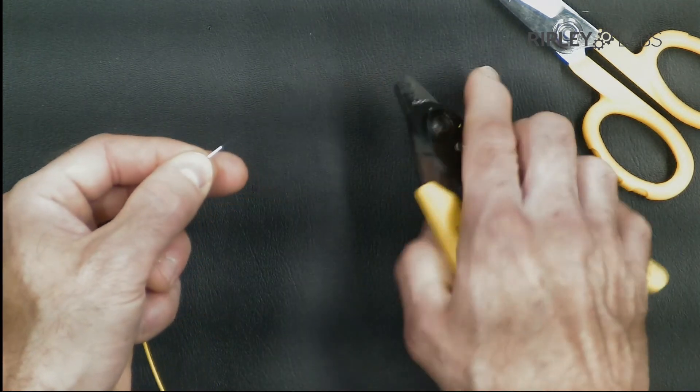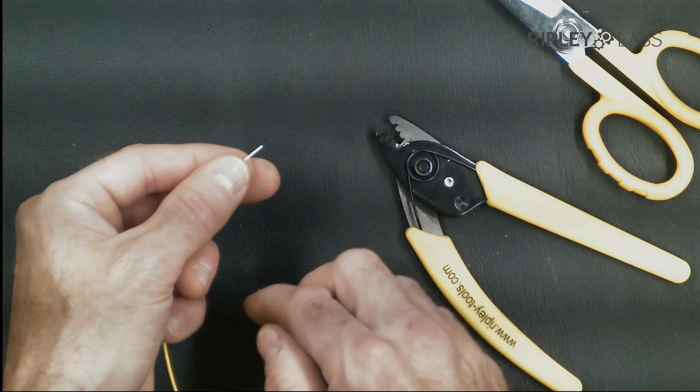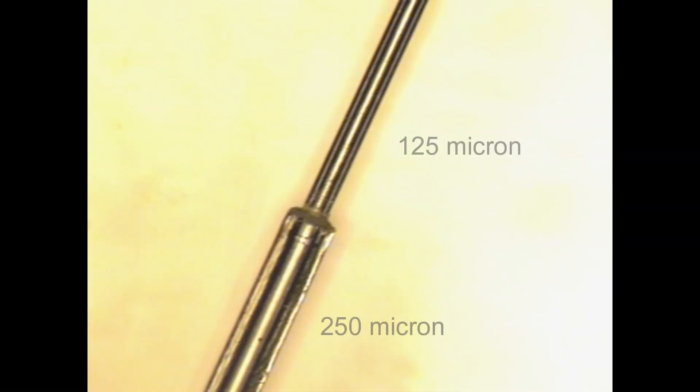We recommend wiping the fiber with a denatured alcohol wipe or lint-free tissue to remove any loose surface residue. The CFS-3 produces a clean and precise strip with no nicks or scratches to the glass fiber.